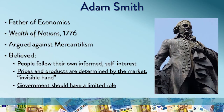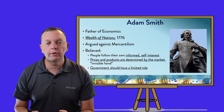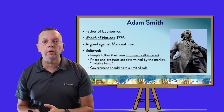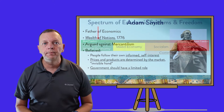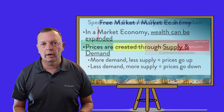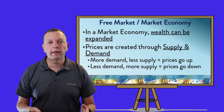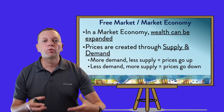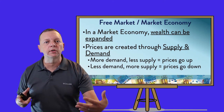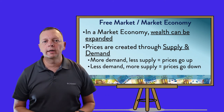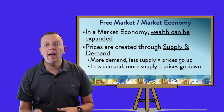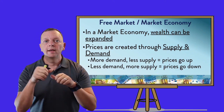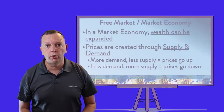And because both sides have a self-interest, the consumer and the producer have to work together. Therefore, prices and products are determined by the market, which Adam Smith called the invisible hand. And because prices are determined by the producer and the seller, the government should have a limited role, largely to establishing a favorable environment. What Adam Smith was describing was the free market system. In the idea of a market economy, wealth can be expanded — everyone is able to partake in success. And key to the market economy is that prices are created through supply and demand. If you have more demand but less supply, prices go up. If you have less demand but more supply, prices will go down.